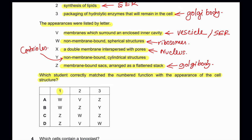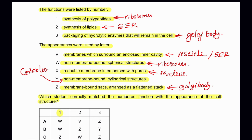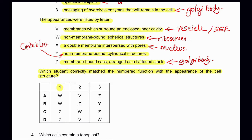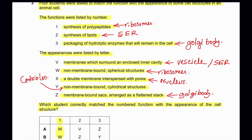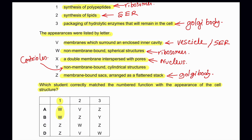For function 1, synthesis of polypeptides, we matched ribosomes — W matches ribosomes, so options A and B could be correct. For function 2, synthesis of lipids, we matched smooth endoplasmic reticulum — only V matches, so we take that. For function 3, packaging of hydrolytic enzymes, it should be the Golgi body which is Z. Therefore A is the correct answer.